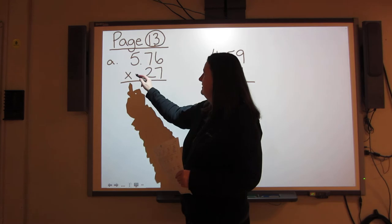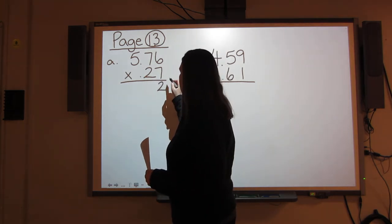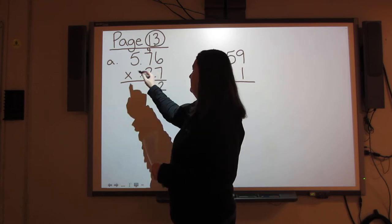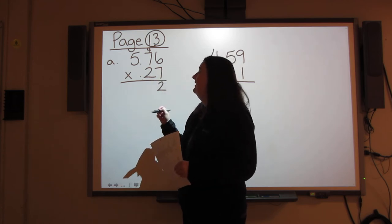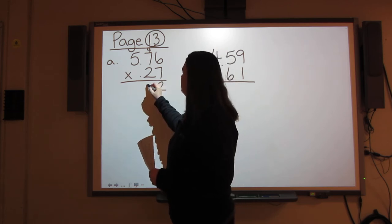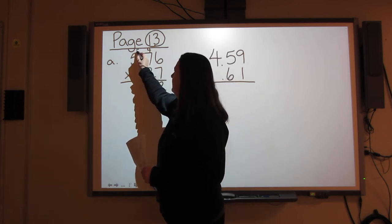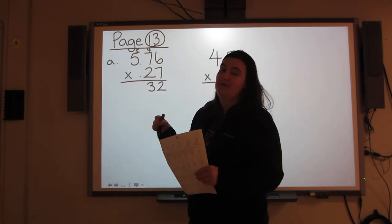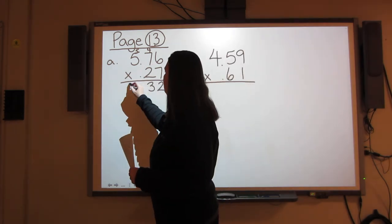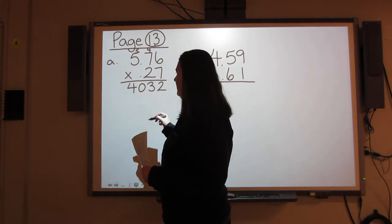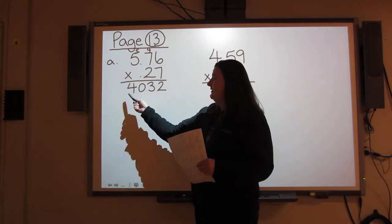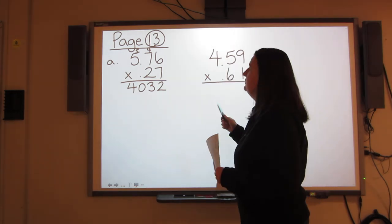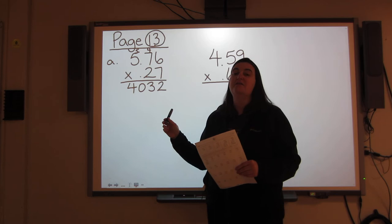7 times 6 is 42. Carry your 4. 7 times 7 is 49, plus the 4 that I carry is 53. Carry your 5. 7 times 5 is 35, plus the 5 that I carry is 40. I do not put a decimal in my answer. Remember, when you're multiplying the decimals, you leave that step to the very end.